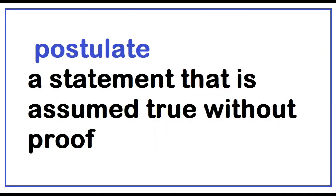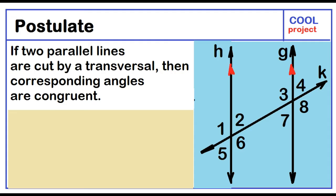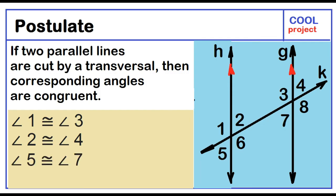Postulate — a statement that is assumed true without proof. If two parallel lines are cut by a transversal, then corresponding angles are congruent. Angle 1 is congruent to angle 3, angle 2 is congruent to angle 4, angle 5 is congruent to angle 7, and angle 6 is congruent to angle 8.